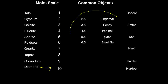The common objects we're going to use: your fingernail has a hardness of 2.5, so it can scratch gypsum and talc but nothing harder. If a fingernail cannot scratch a mineral, we pick up a penny. A penny can scratch calcite, gypsum, and talc. After that, we have an iron nail with a hardness of 4.5, a glass plate of 5.5, and a steel file of 6.5.